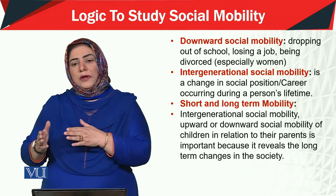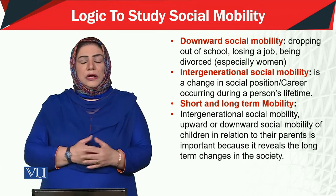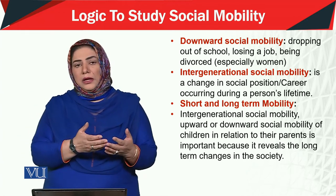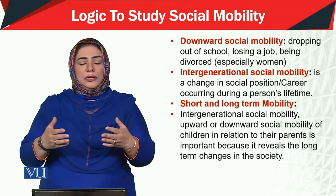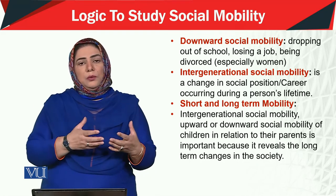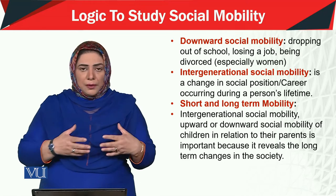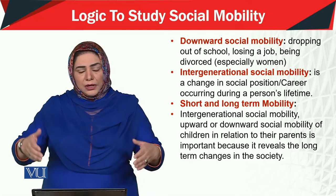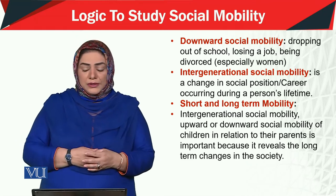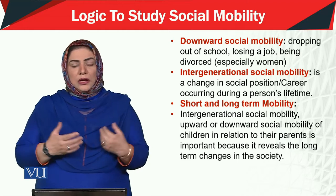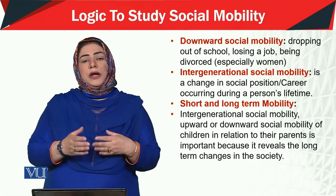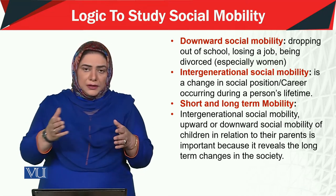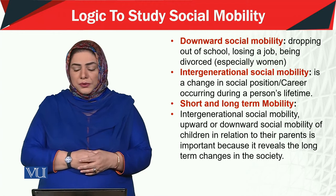For example, someone from the family passed a competitive exam, or a family living in a village had one member who got educated and took the whole family to an urban area, settled them in a big city. The entire generation is influenced by that. Similarly, if a person achieves significant career development, it changes the status of the entire family — this is called intergenerational social mobility.